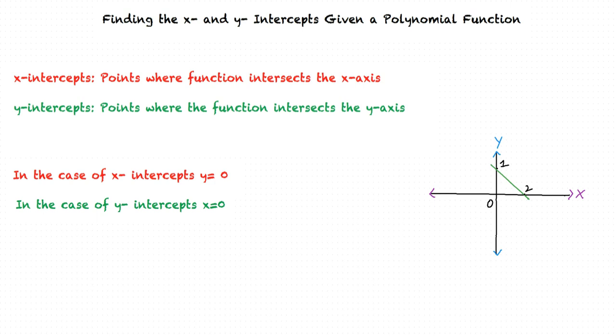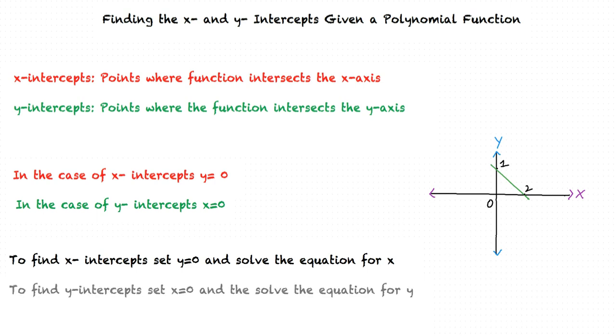In fact, this is the technique we would be using to find the x-intercepts and y-intercepts of a given polynomial function. In order to find the x-intercept of the polynomial function, we set y equals 0 and solve the equation for x. Similarly, to find the y-intercept, we set x equals 0 and solve the equation for y.